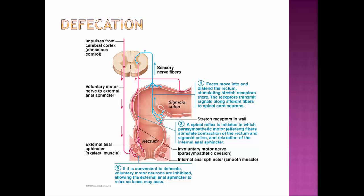The large intestine is also involved in defecation — the fancy term for having a bowel movement. Peristaltic contractions push feces into the rectum, and these wave actions cause stretch receptors to stimulate further peristaltic contractions in the rectum, moving feces toward the anus. More stretch receptors then send impulses up to the central nervous system, and parasympathetic motor fibers are sent back down. There are two sets of sphincter muscles: an internal sphincter and an external sphincter.